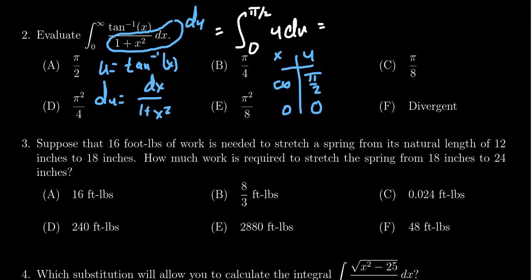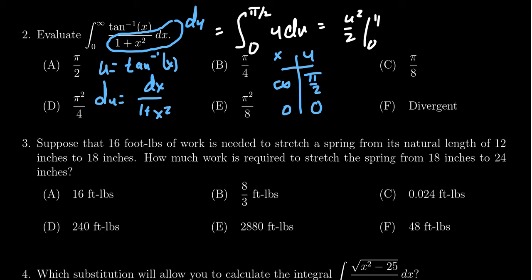We find the antiderivative, which is u squared over 2, evaluated from 0 to π/2. When you plug in 0, everything disappears. So we get 1/2 times (π/2) squared, which simplifies to π squared over 8. That gives us option E.